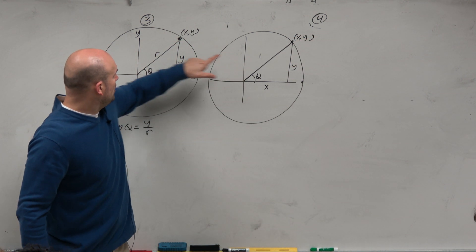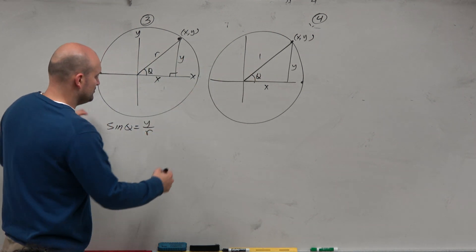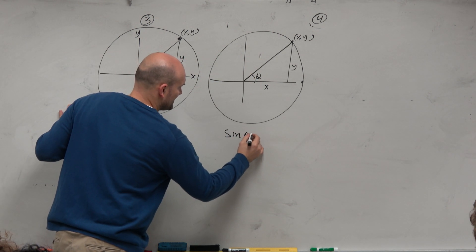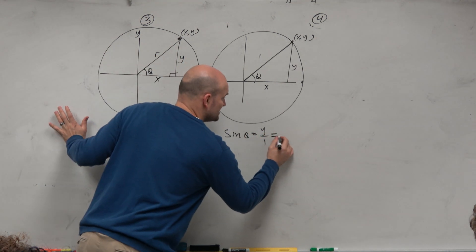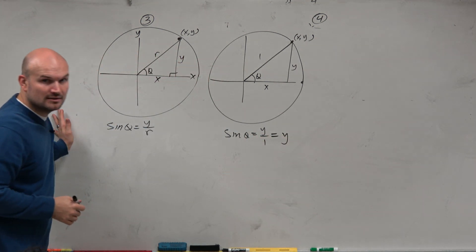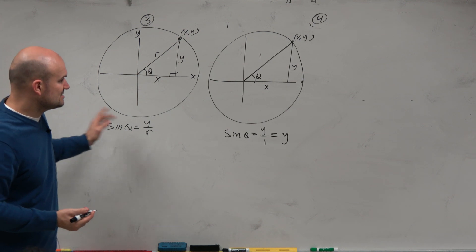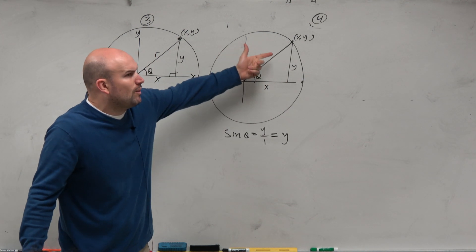When you're doing, if you know R is equal to 1, do we really need to say sine of theta is y over 1? Can we just now say the sine is equal to y? Doesn't that make sense? Like the sine is opposite over hypotenuse. Well, why put it over 1?